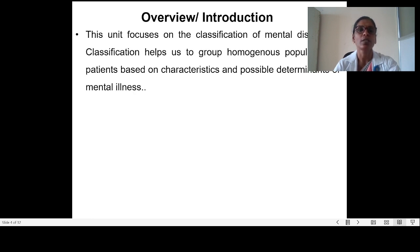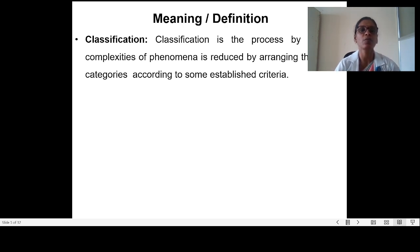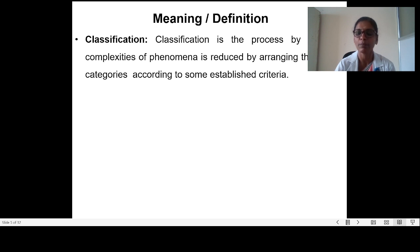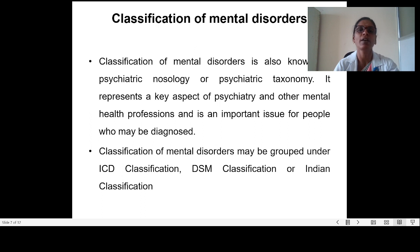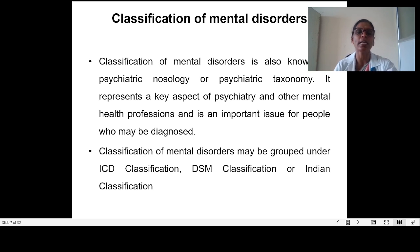The specific objectives of the class are: we are going to see the definition of classification, discuss all the classifications of mental disorders, elaborate the ICD-10 classification, enumerate the DSM-4 and DSM-5 classification, and see the list of Indian classification of mental disorder. Classification is a process by which a complexity of phenomena is reduced by arranging them into categories according to some established criteria. This is also called psychiatric nosology or psychiatric taxonomy, and represents a key aspect of psychiatry and other mental health professions.